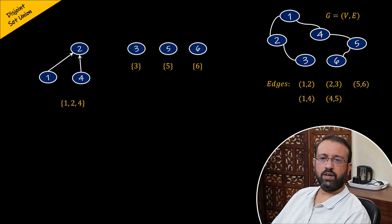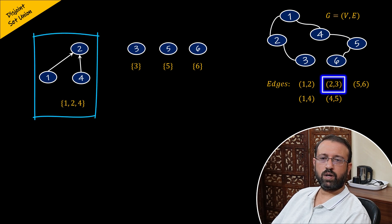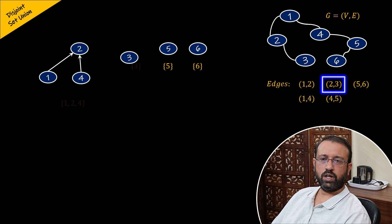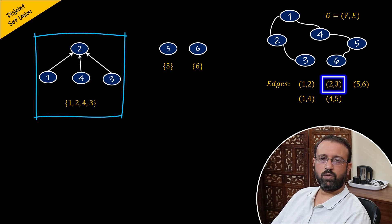Then we have an edge between vertex two and vertex three. Vertex two belongs to the set which contains one, two, and four, and vertex three belongs to set three, so they are in different sets. Therefore, we will perform union of the set containing one, two, and four, and set three. After the union operation, vertices one, two, four, and three will be in the same set.